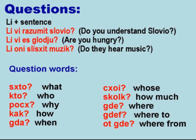To Form a Question, you put the word Li to the beginning of the sentence. For example: Li Vi Razumit Slovio? — Do you understand Slovio? Li Vi Es Glodiu? — Are you hungry? Li Oni Slyshit Musik? — Do they hear music? Question words: Shto — What. Kto — Who. Poch — Why. Tak — How. Gda — When. Choy — Whose. Skok — How much. Gde — Where. Gdef — Where to. Ot gde — Where from.